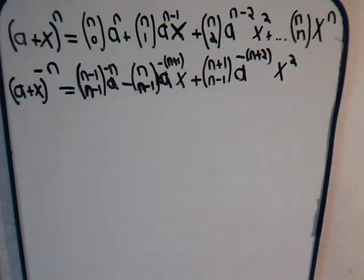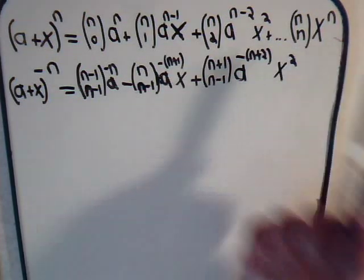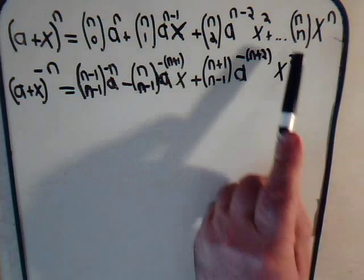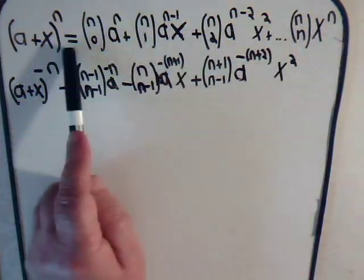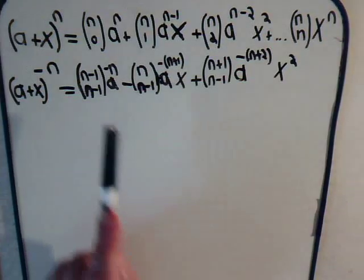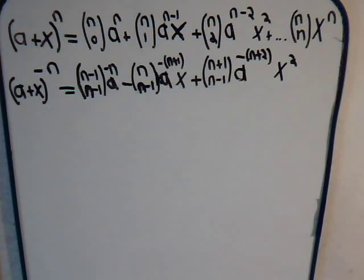And the final term in the expression will then be x to the n, and again its coefficient is just 1, but we write it as the binomial coefficient n over n, so that we don't break the pattern. But now this is a finite sequence when n is a positive exponent.